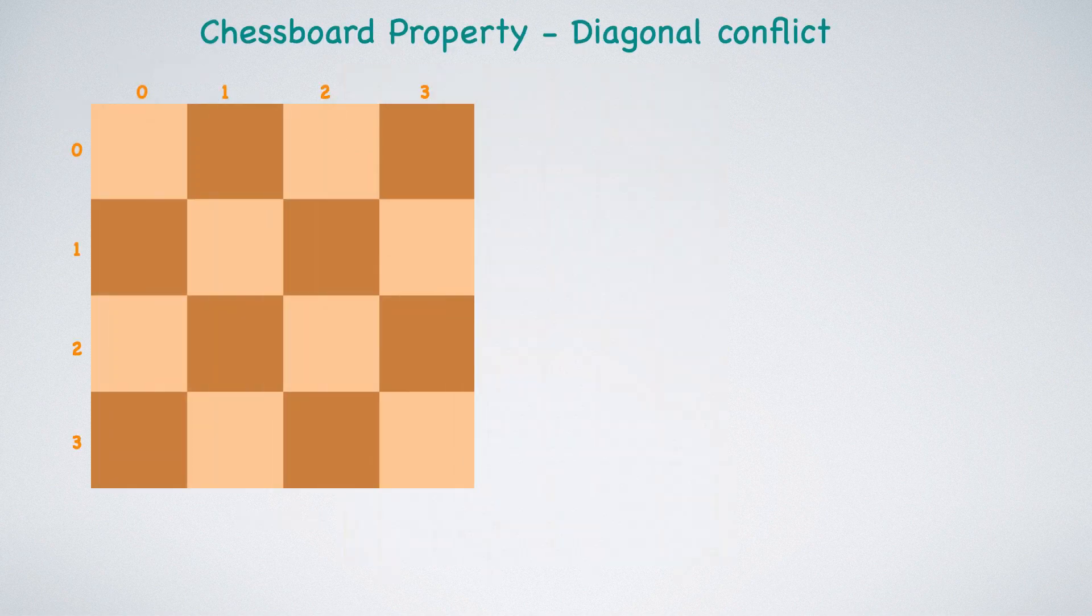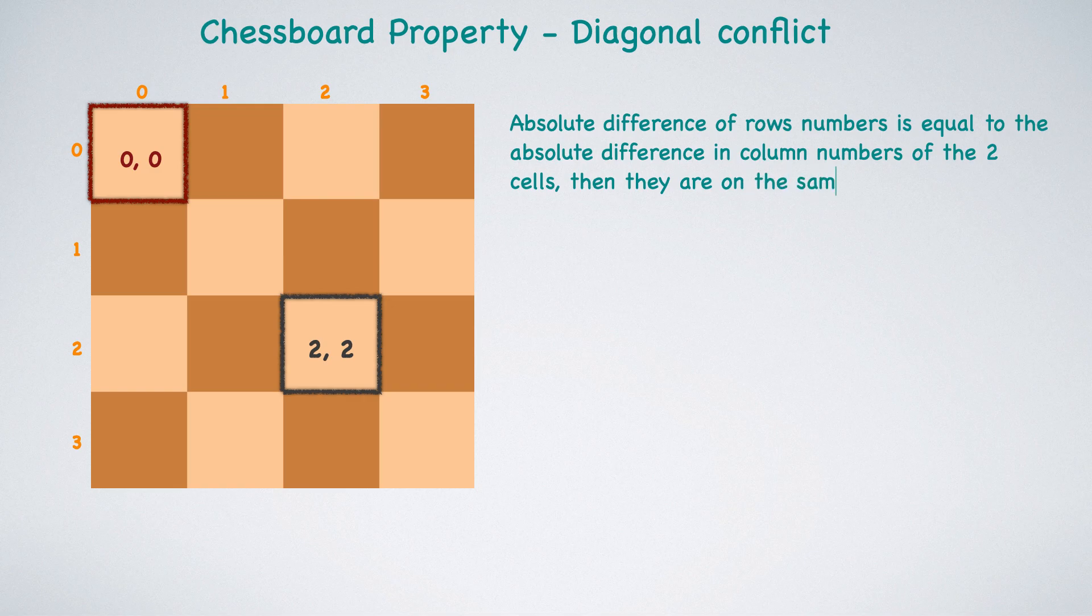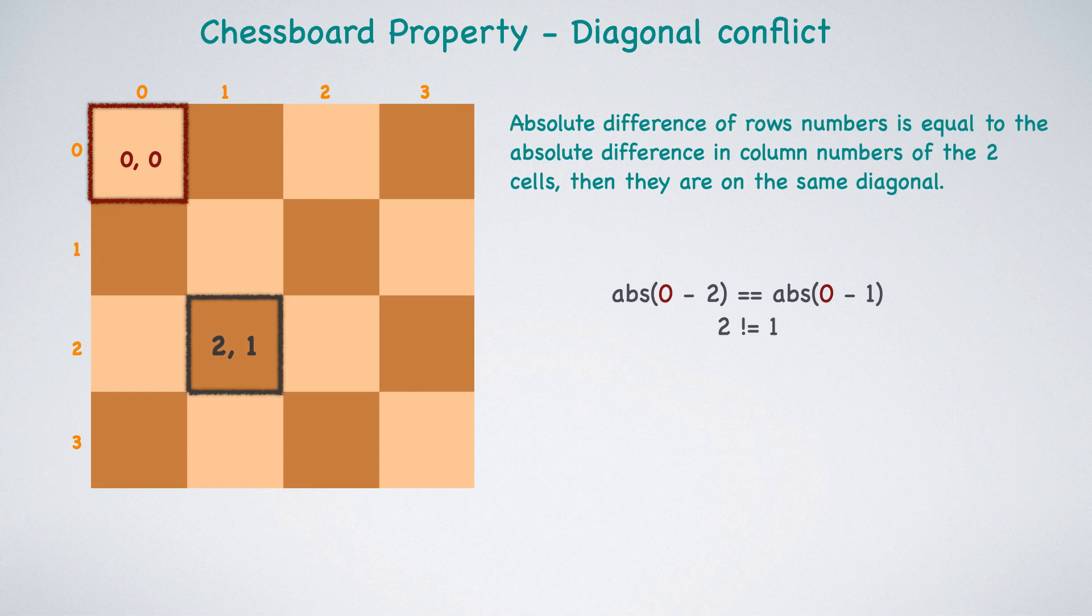Let's go over a chessboard property to detect diagonal conflicts. Let's select two cells, the first at row 0, column 0 and the second at row 2 and column 2. Are these two cells on the same diagonal? While it's visually apparent that these cells are part of a diagonal, can we use their row and column numbers to confirm this? If the absolute difference of row numbers is equal to the absolute difference in column numbers of the two cells, then they are on the same diagonal. Let's apply this formula to these two highlighted cells. Both sides of the expression evaluate to 2 and so they are on the same diagonal. Consider this other cell at row 2 and column 1. Is this in diagonal with the first cell? Let's apply the same formula, so absolute of 0 minus 2 and compare it to the absolute of 0 minus 1. 2 is not equal to 1 and so they are not part of the same diagonal.